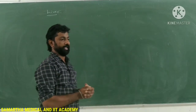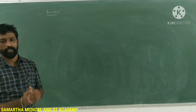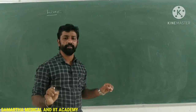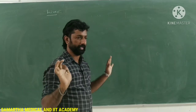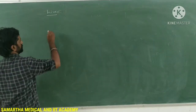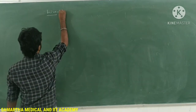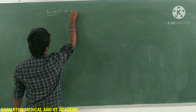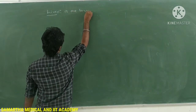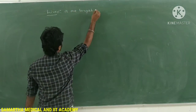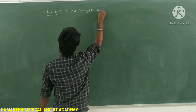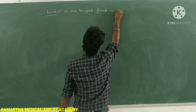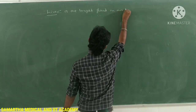The next gland is the liver. Liver is the largest gland present in human beings — the largest gland in our body.